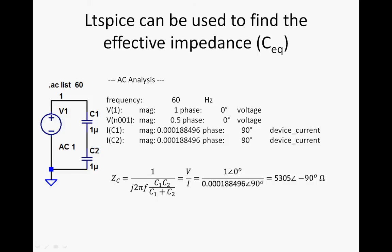Again, it's V divided by I. And since the current is the same through each one of those capacitors, we only need to use one. In this case, we get 5,305 ohms with a phase of minus 90 degrees, meaning that the effective capacitance went down. So the impedance went up.